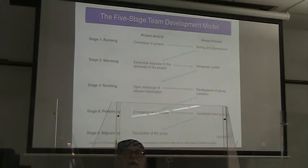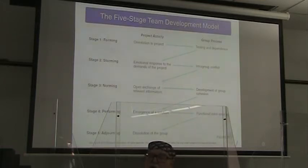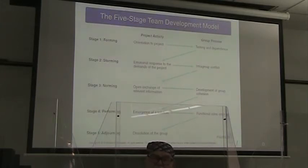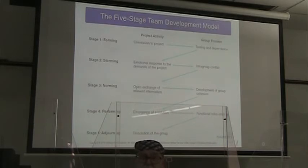We talk about the five-stage team development model. In stage one, we have forming — we're putting the team together. Our project activity is orienting everyone to the project. The group activity is testing each other and discovering our dependencies in the intergroup model.